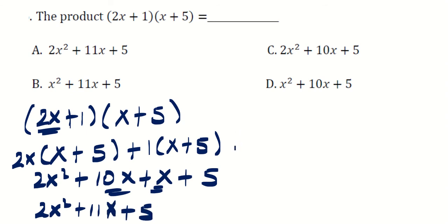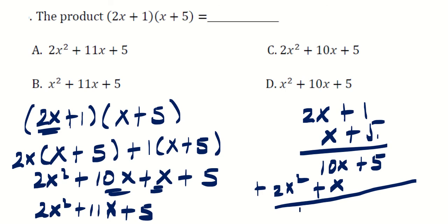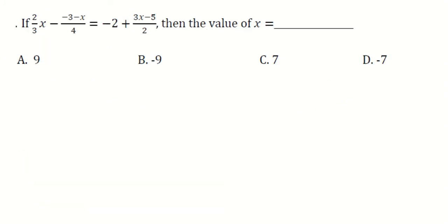You can also multiply using the vertical method. For (2x plus 1)(x plus 5): 5 times 1 is 5, 5 times 2x is 10x; then x times 1 is x, x times 2x is 2x squared. Adding vertically: 2x squared is alone, 10x plus x is 11x, plus 5. The same answer: 2x squared plus 11x plus 5. The answer is A.